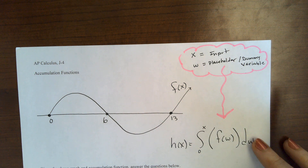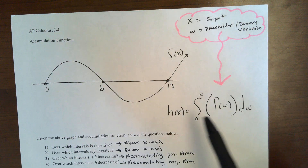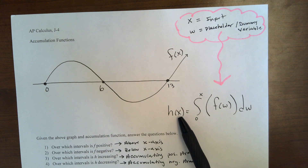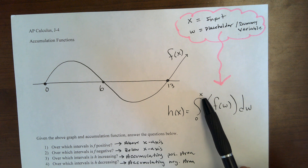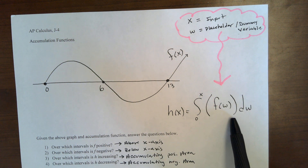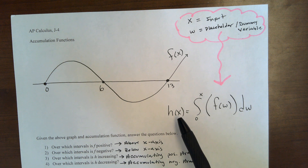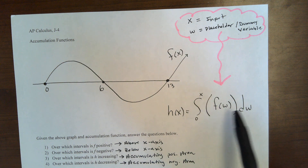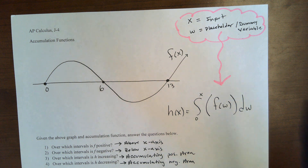The important thing, guys, is that whatever goes in here for x is also going in up here for x. And we have to call this variable here something different, because otherwise, if we also called it x, then it would look like the input number goes in all of these four places, but it doesn't — it just goes in up here. So that's why we needed the dummy variable.